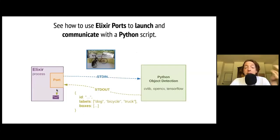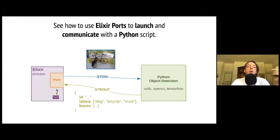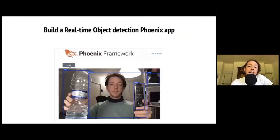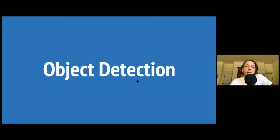There are many ways of doing interop. We're going to see how to use Elixir ports to launch a Python script, communicate with it, and exchange messages. And at the end, a simple example of how to bring real-time object detection inside a Phoenix web application and deal with webcam frames. So let's start from the beginning.